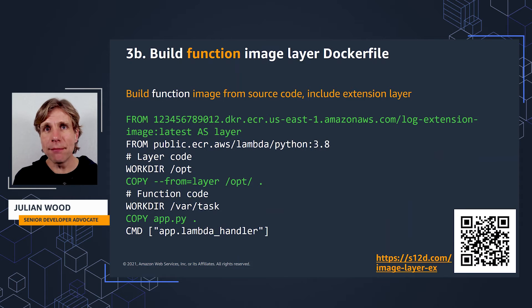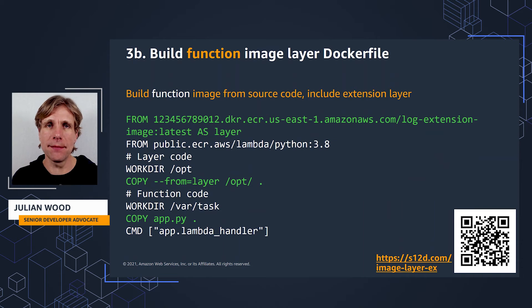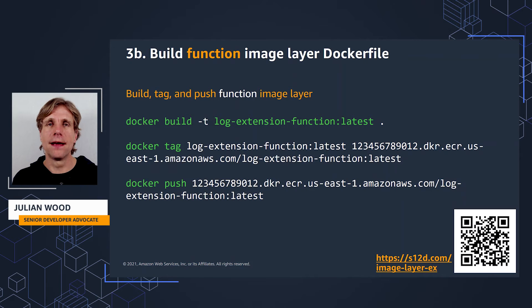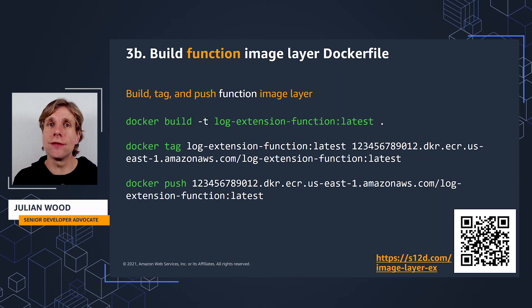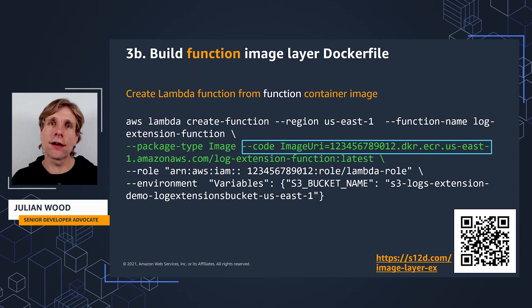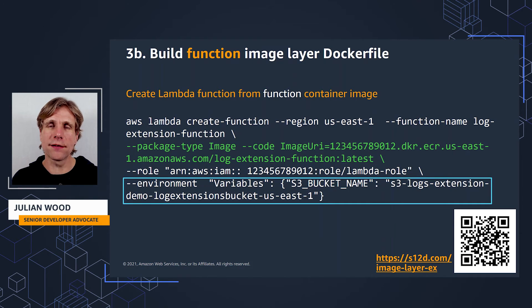When you build your Lambda function, you add the extension container image layer you've created as you would any other container image layer. This uses the same approach as option one, where files are copied from the extensions layer and the function image is built from a Python base image. Using the Docker CLI, you build the function image from the Dockerfile, tag it with a name and version, and push the function image to ECR — function images do need to be stored in ECR. When you create a Lambda function, you set the configuration package type as image and the image URI to the ECR repository. You can also set environment variables as part of the function configuration, which can be used by both the function and the extension.